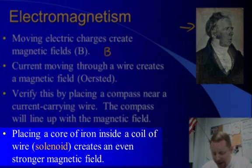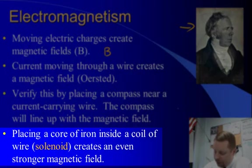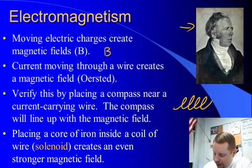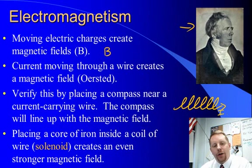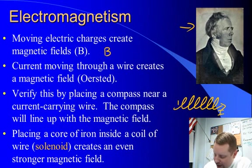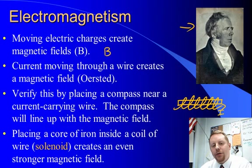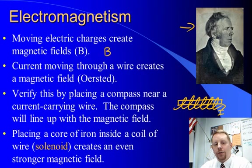Placing a core of iron inside a coil of wire is known as a solenoid. If we have a coil of wire and run current through it, we have a solenoid and we create an electromagnet. But if we take an iron core and place it in the middle, the magnetic field due to that solenoid gets even stronger. So putting an iron core inside an electromagnet greatly strengthens the magnetic field.